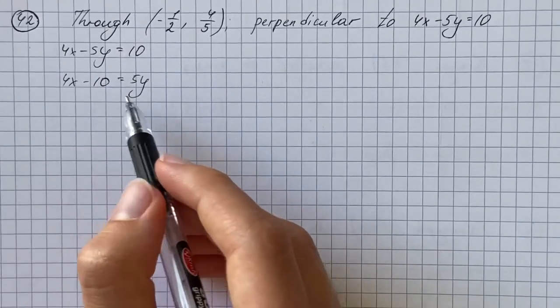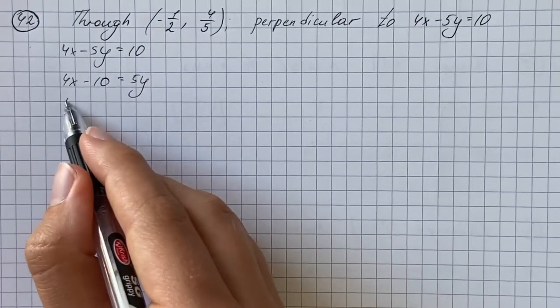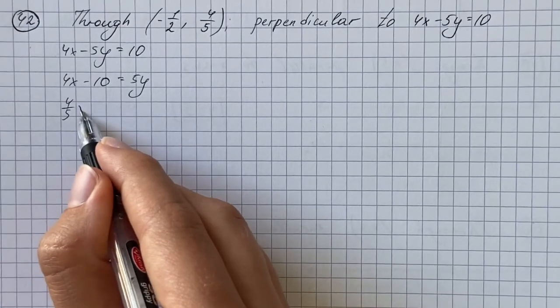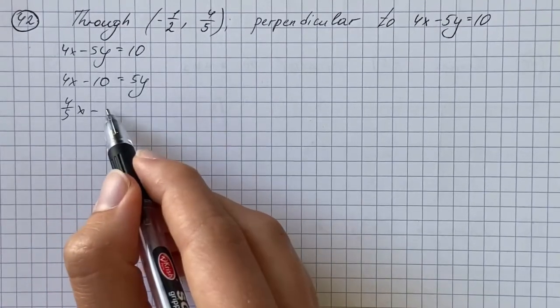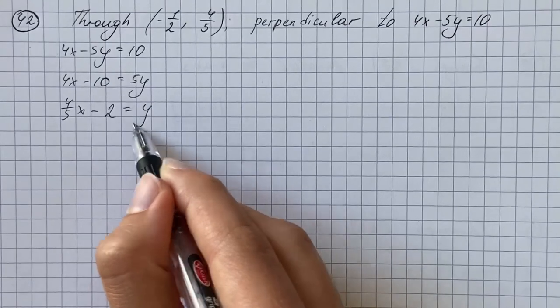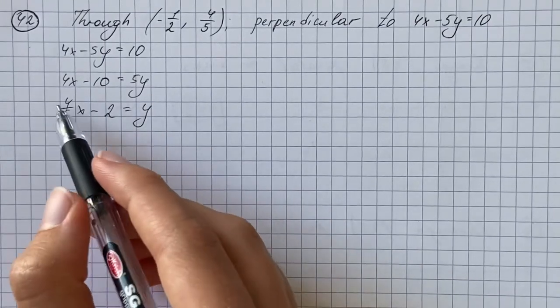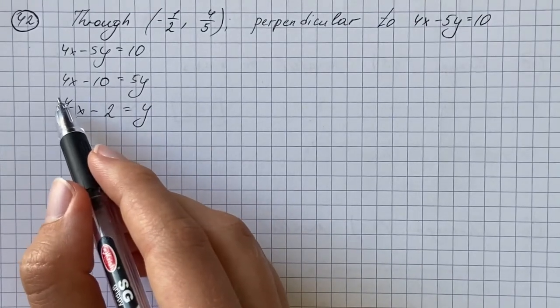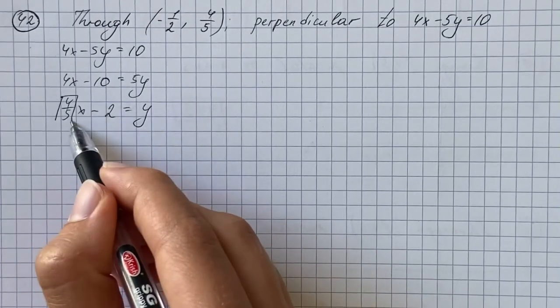And now we're going to divide both sides by 5 to get 4 fifths x minus 10 over 5 is 2 equals y. So we get that the slope of this line is 4 fifths.